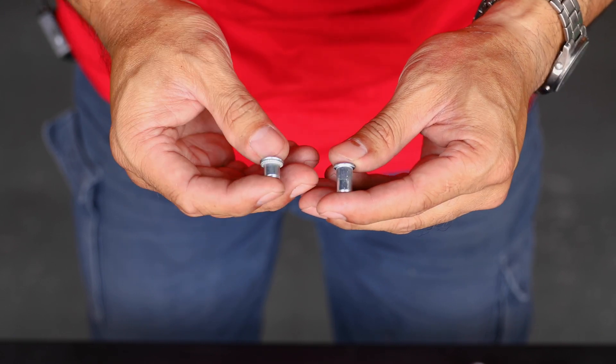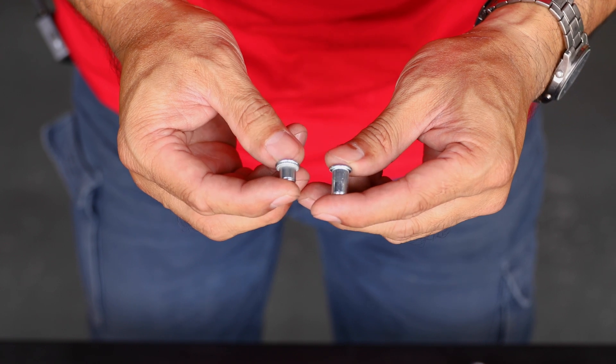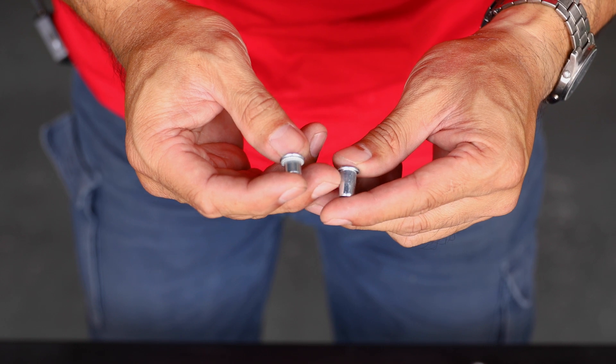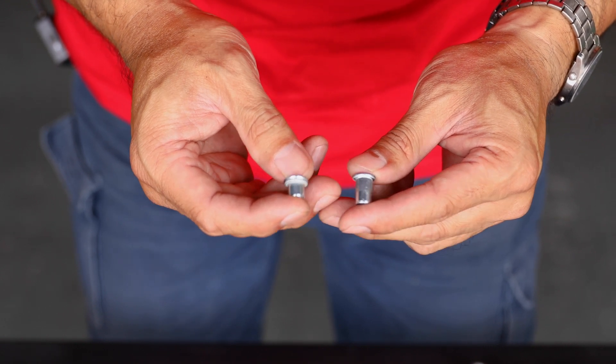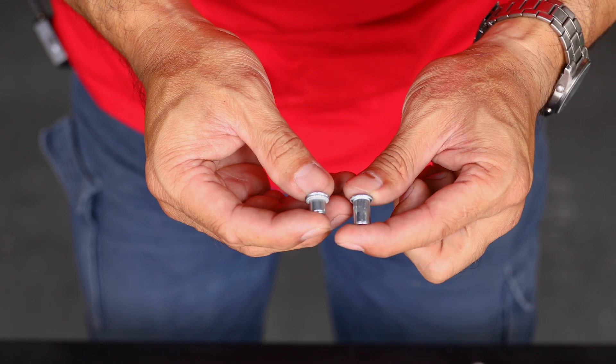So here we have a nutsert, two M6 nutserts actually, one that hasn't been set and one that has been set. You can see that around the ribbed area it's a little bit thinner so when you pull on this thread, the threaded portion on the bottom, it collapses and flares out and grips onto the hole. Really clever design.